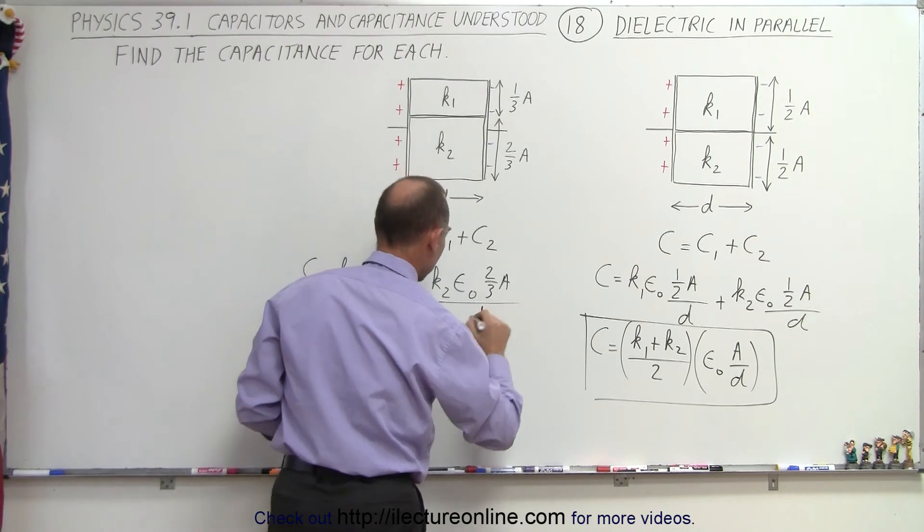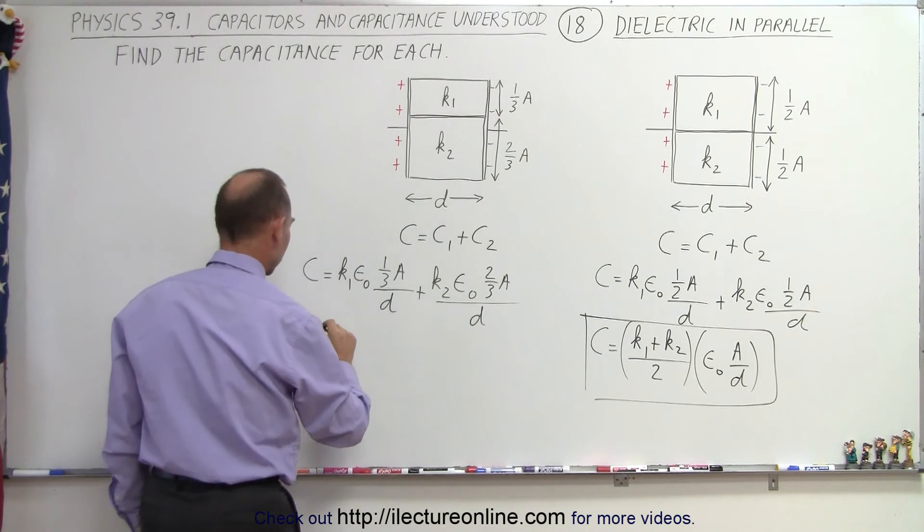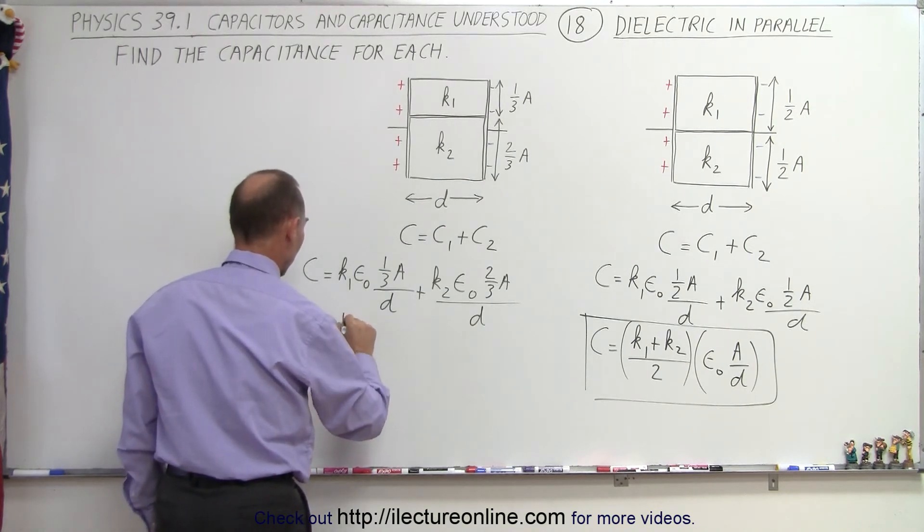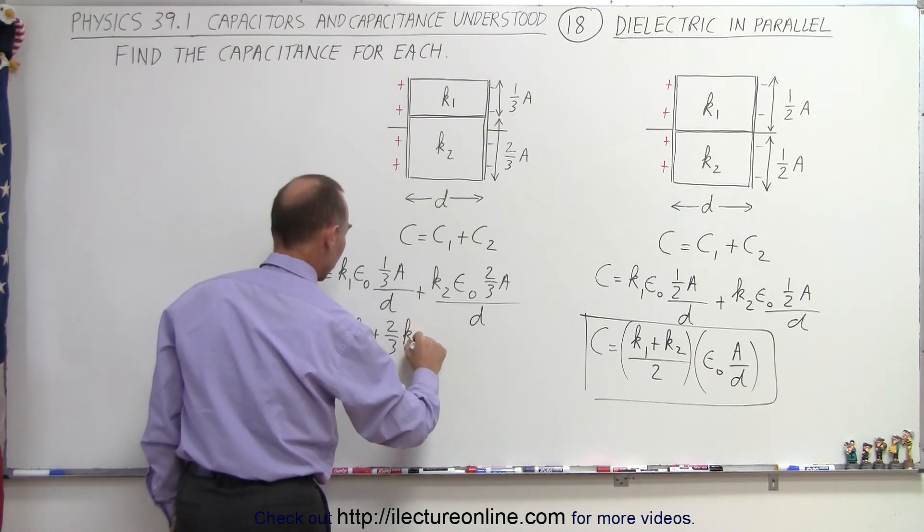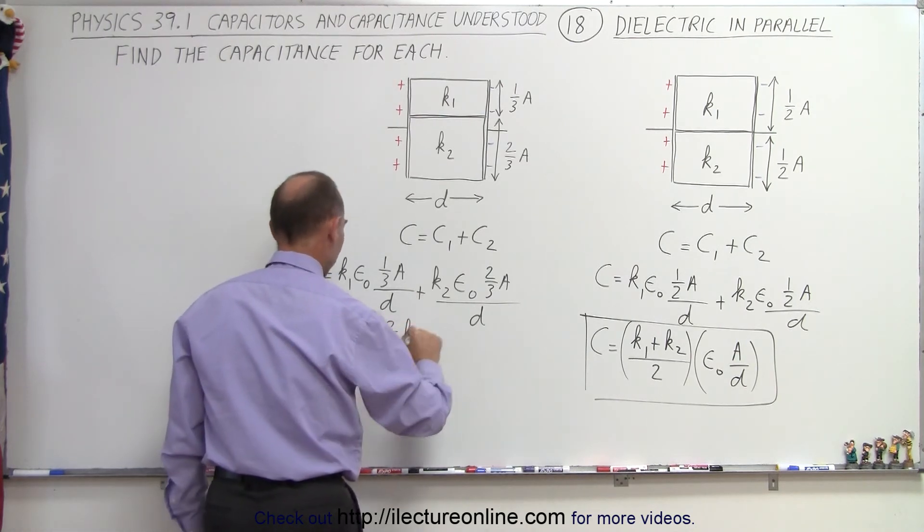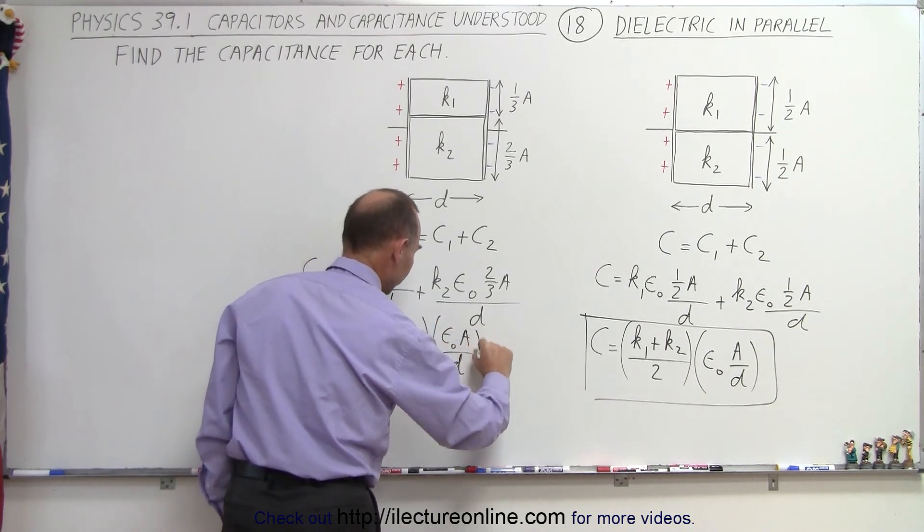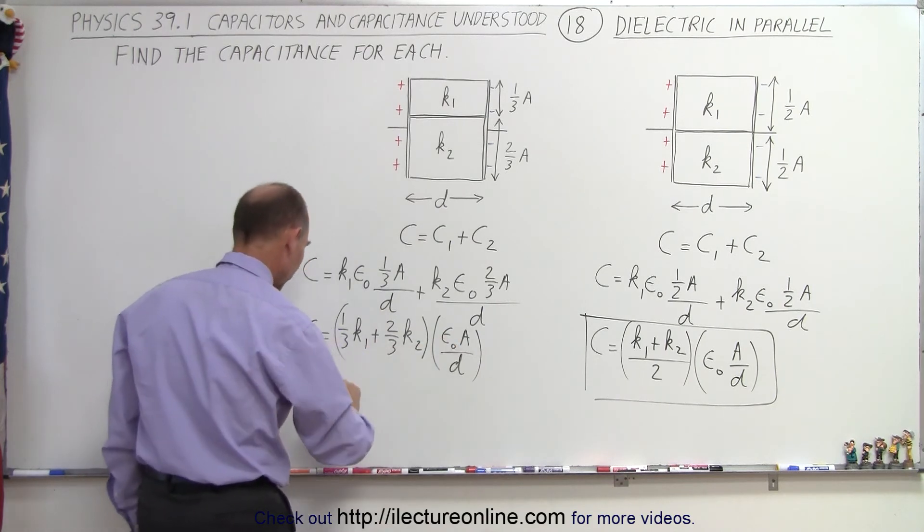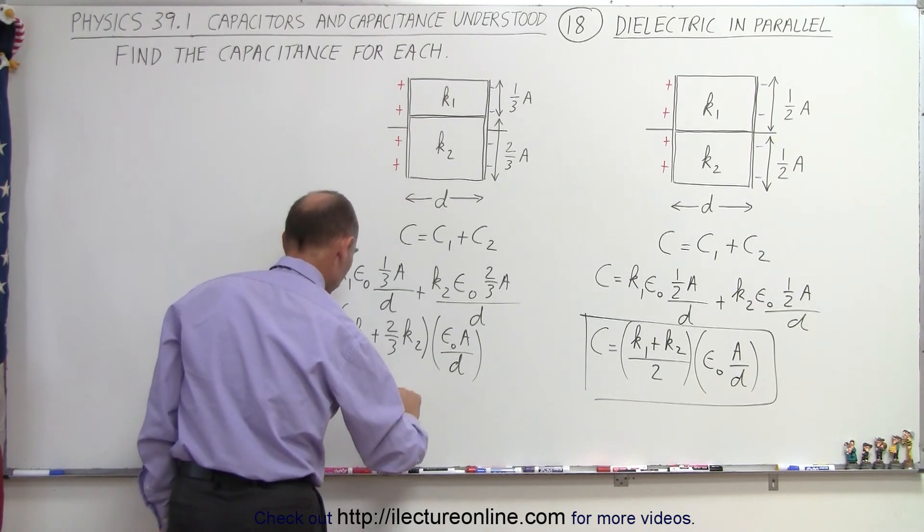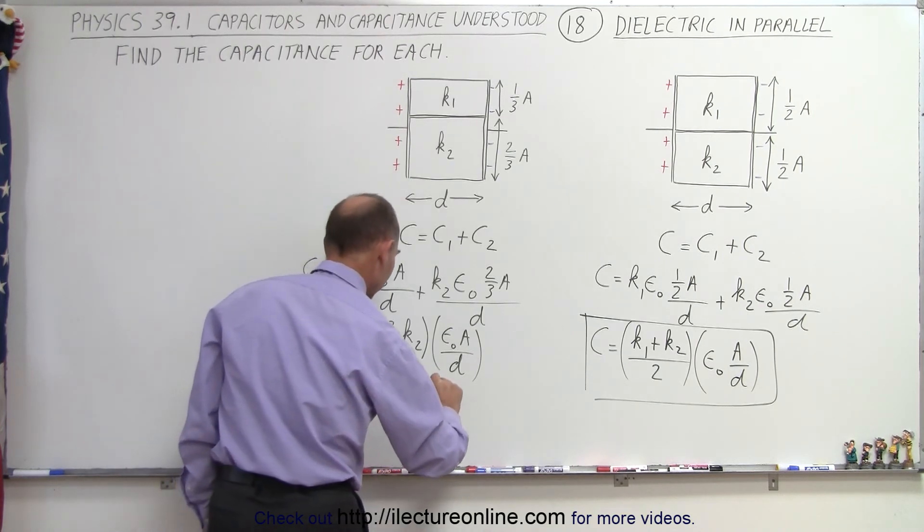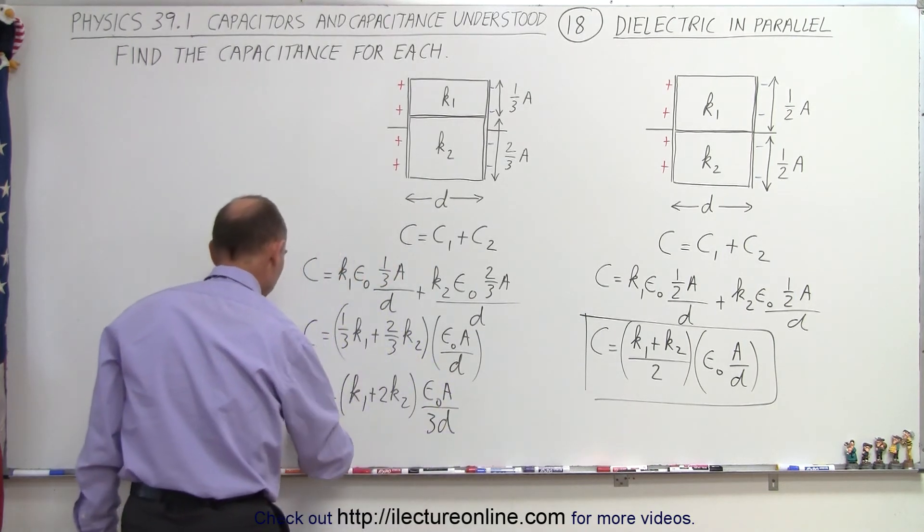So if I factor in epsilon sub naught, a, and d and leave everything else alone, I end up with c is equal to one-third k1 plus two-thirds k2, all of that multiplied times what's common which is epsilon sub naught a divided by d. And then I can bring one-third and put it in here, so this would be c is equal to k1 plus 2k2 times epsilon sub naught a over 3d, and that would be the capacitance.